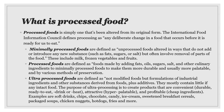Minimally processed foods and processed foods are made by adding fats, oils, sugars, and salts. Ultra-processed foods are not modified foods but formulations of industrial ingredients and other substances derived from foods, plus additives. Examples include soft drinks, chips, chocolate, candy, ice cream, sweetened breakfast cereals, packaged soups, chicken nuggets, hot dogs — the list goes on and on.